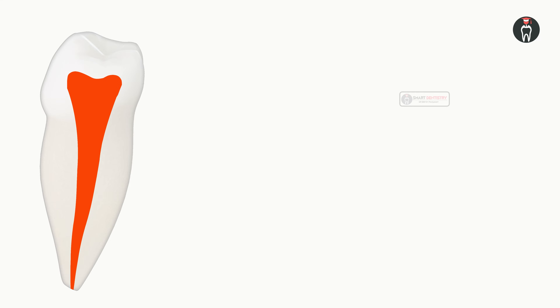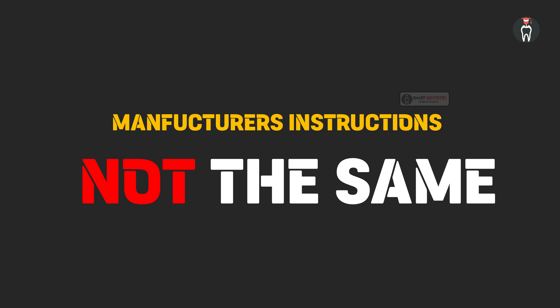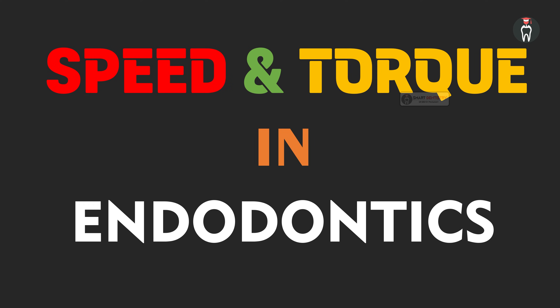For a straight root canal tooth which has no calcifications or pretty wide root canals, in those situations we can follow these settings. But what about the clinical situations where there are calcifications, where there are curvatures? It is not the same speed and torque settings for every clinical situation. For every clinical situation and for every file that you are going to use, the speed and torque settings are going to be very different. So it is essential, being a person who does root canal treatment in day-to-day practice, to know the importance of speed and torque in endodontics so that we can prevent file separations.